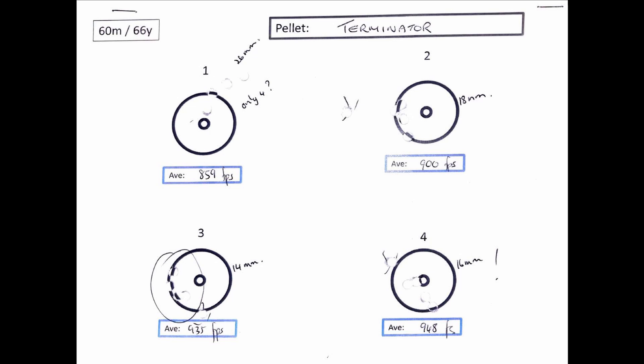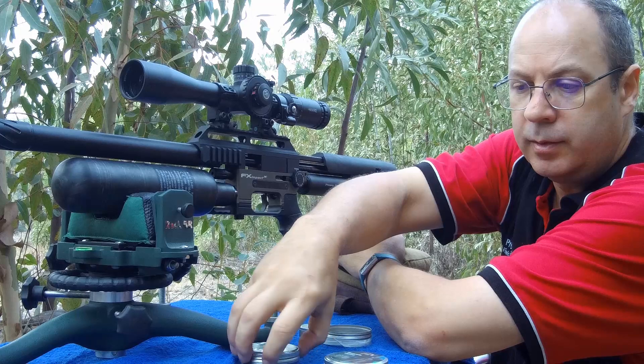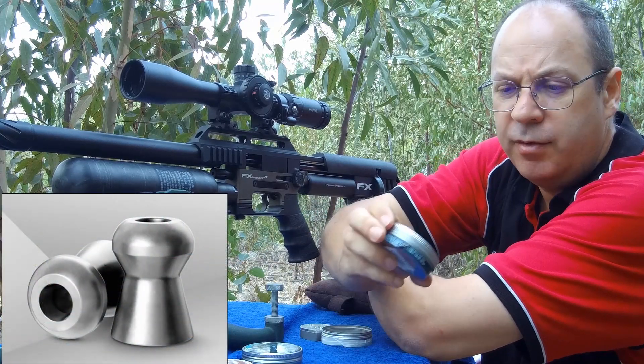Because when I go dove hunting rather, for the 30, 40, 50 meters, I seldom go past 70 meters. At 60 meters, I will get the best, don't you worry about it. Alright, time for the next pellet.